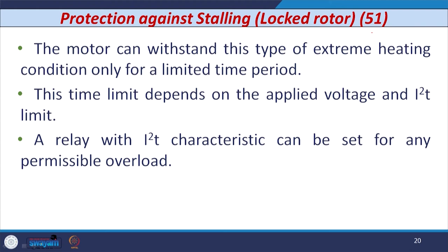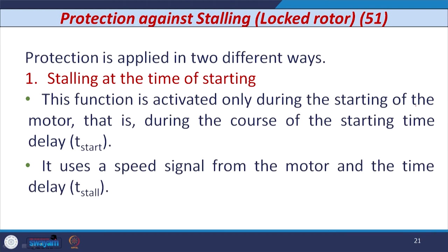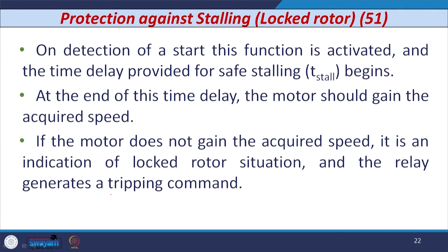The motor can withstand this extreme heating condition only for a limited time period. This time limit depends on the applied voltage and the I²RT limit, where I² is the current flowing through the winding and T is the time. A relay with I²RT characteristic can be set for any permissible overload. Stalling protection is applied in two ways. The first stalling protection is given at the time of starting of the induction motor — this function is activated only during starting, during the course of starting time delay T_start. It uses a speed signal from the motor and the time delay T_stall, which is the stalling time specified by the manufacturer.